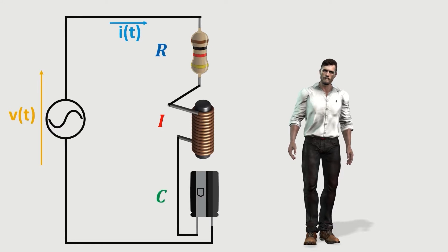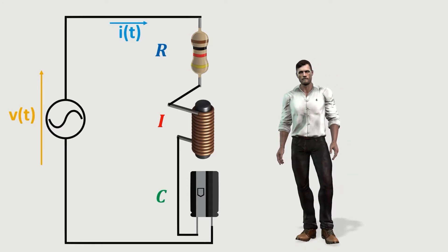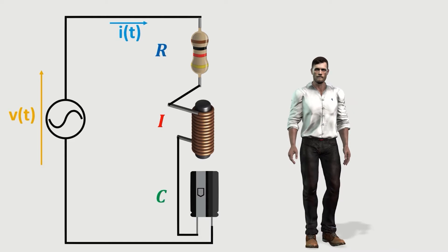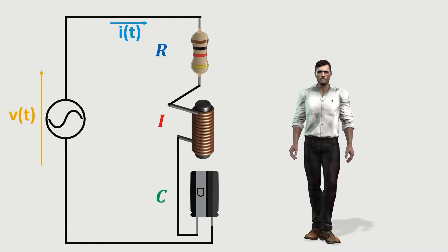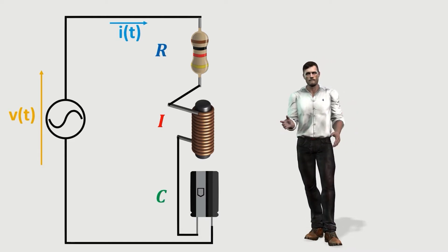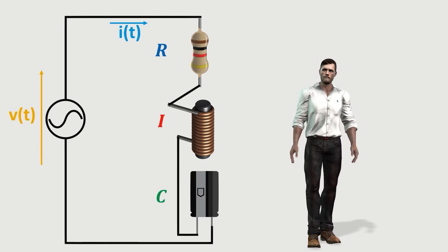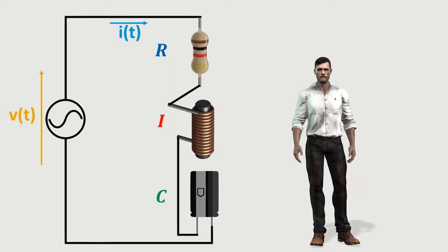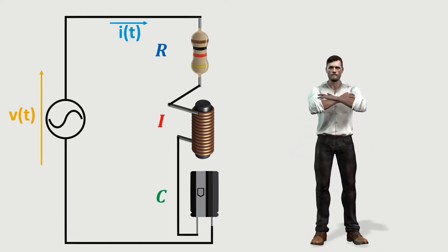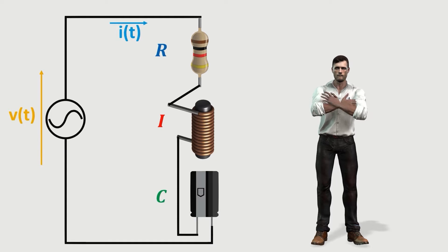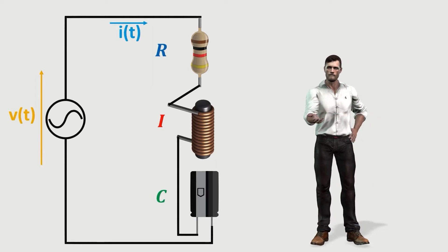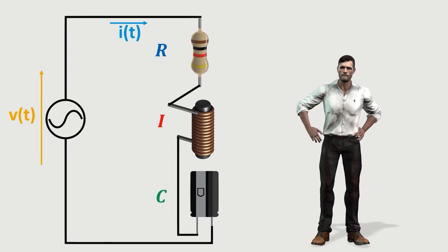Hello friends. Many times when we talk about electrical installations, electronics or instrumentation, we use the concepts of resistance, reactance and impedance. For example, we talk about the grounding resistance, the input impedance of an instrument, the impedance of the ground loop, or the reactance of a luminaire. In this video we are going to see in a simple way the meaning of these concepts, as well as the differences between them.